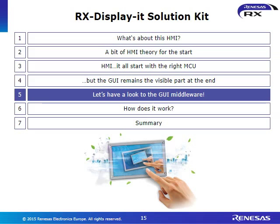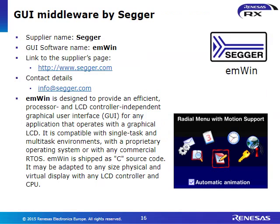Before looking at the kit itself, let's briefly review the available GUI software options. First is SEGA's GUI middleware called emWin. It has a very small footprint, ships as C source code, is available for anyone to modify, and can run on an RTOS or in a single-task environment.